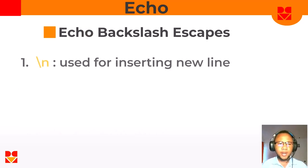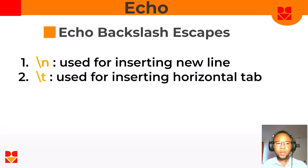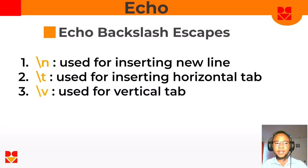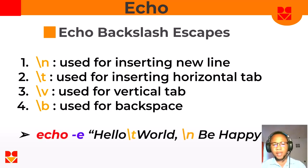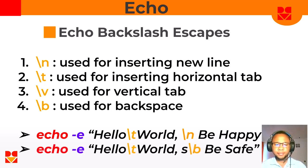Now let's look at some of the backslash escapes the echo command provides. You can use \n for inserting a new line, \t for inserting a horizontal tab (the spaces as we saw earlier), \v to insert a vertical tab, and \b for backspace. So if for some reason you want to delete characters one by one you can use \b. For example: echo -e "hello\t world\n be happy" will space out 'hello world' with a tab and put 'be happy' on a new line.